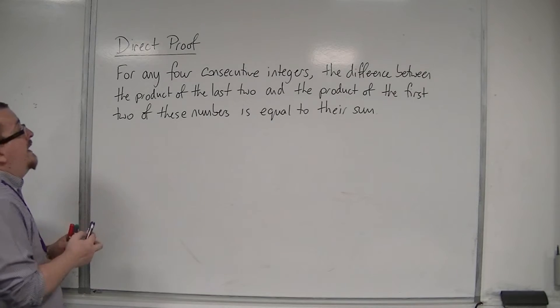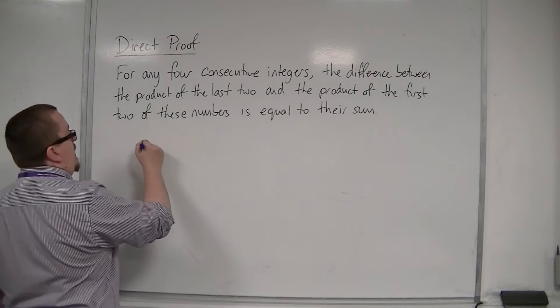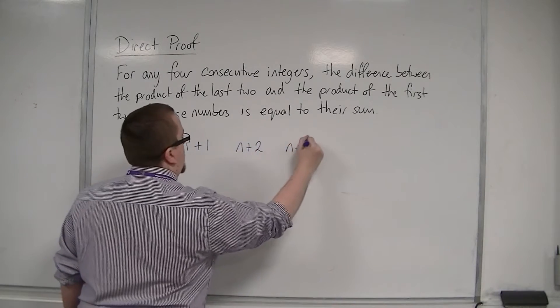Let's first write down four consecutive integers. We can represent them as n, n plus 1, n plus 2, and n plus 3.